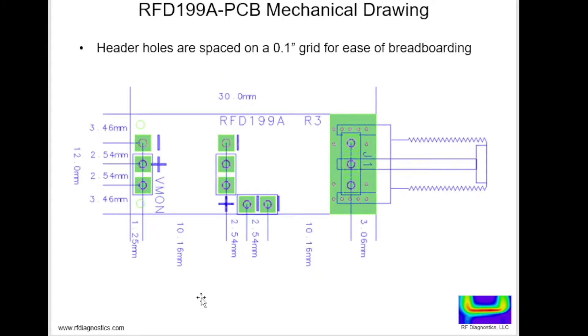Here is a mechanical drawing of the RFD199A PCB. We have header holes spaced every 2.54 millimeters or 0.1 inch on a uniform grid. So you could add headers.